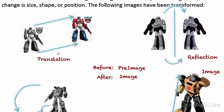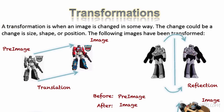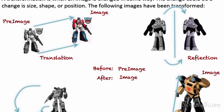The first transformation is called a translation. We always start with an original image — the pre-image — which is the image before we change it. The image after we change it is simply called the image. A translation is when you take a pre-image and slide it across the graph paper. Using Optimus Prime as an example, this image was slid to the right and up. If it slides — up, down, left, right — it's called a translation.